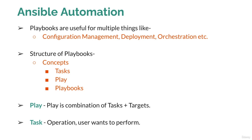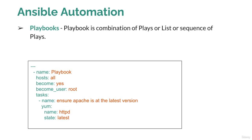Targets are the servers on which you want to execute something, and you can define specific targets using groups in the Ansible inventory. A playbook is the combination of multiple plays — a list or sequence of multiple plays. Within a single playbook you can have multiple plays, and a single play is a combination of tasks and targets.